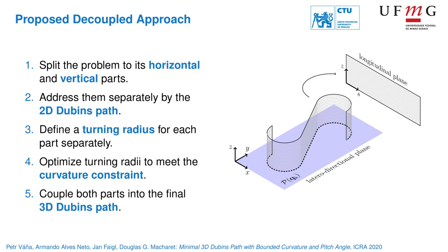When we combine both horizontal and vertical turns, turning radii need to be increased to meet the curvature constraint. Therefore, these radii are optimized to find a trade-off between the horizontal and vertical turns. Finally, both parts are combined to form the final 3D path.